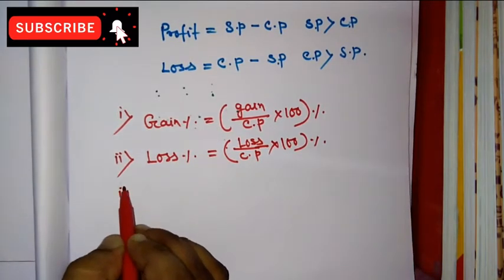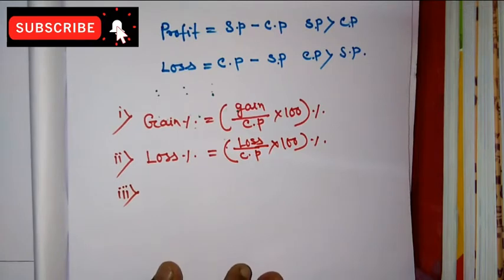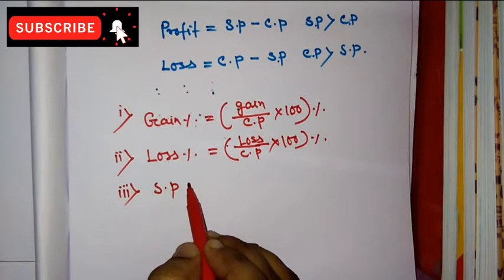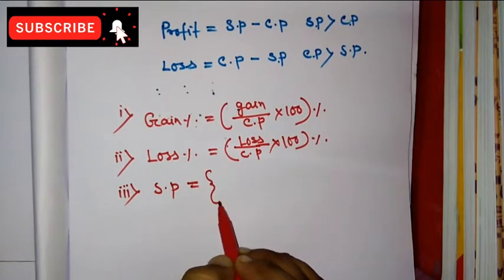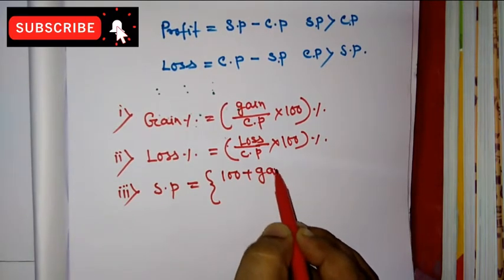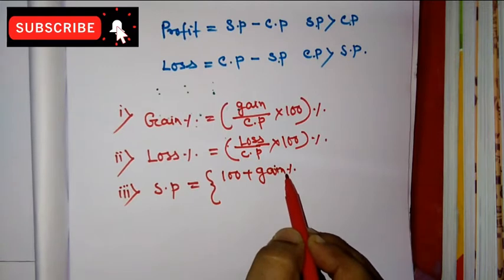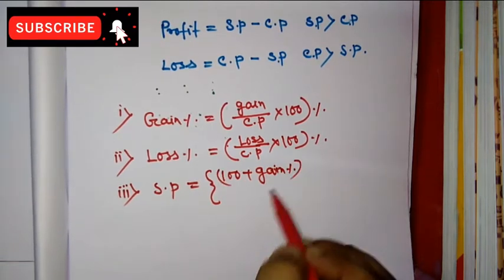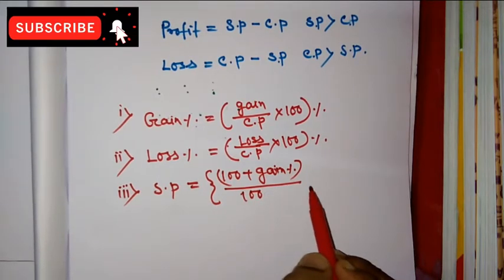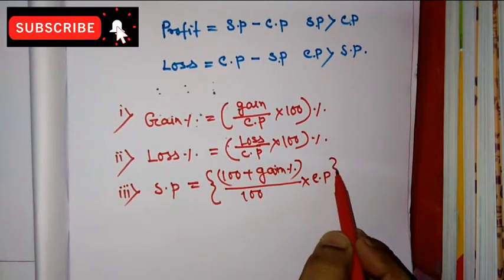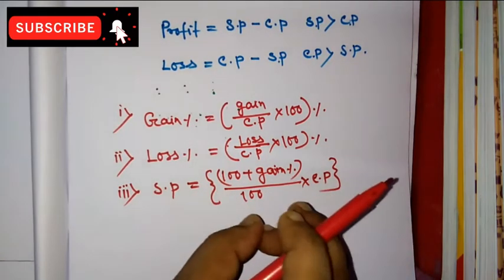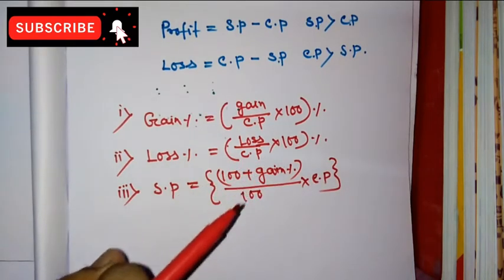Number three: find out SP, that means selling price. SP is equal to open bracket 100 plus gain percentage, close bracket, divided by 100 into CP. Using this formula we can easily find out the SP of the product.